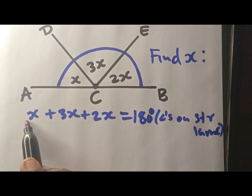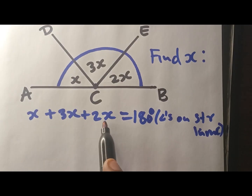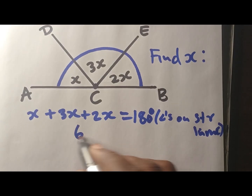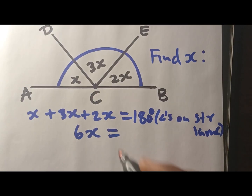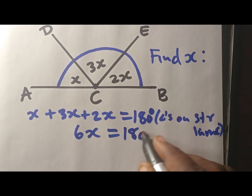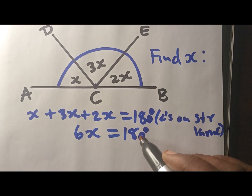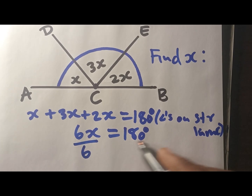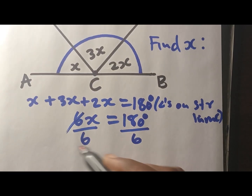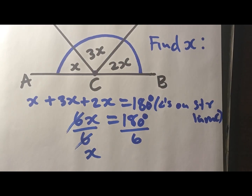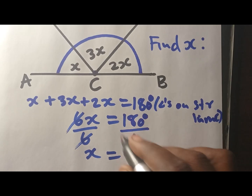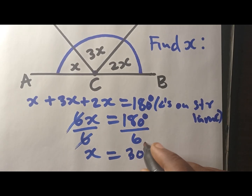So: 1x plus 3x plus 2x — these are 6x. Now you need to equate them to 180. 6x equals 180. But we need x, so we divide both sides by 6. Why are we doing this? Because we want this 6 to leave x alone. Now we have x alone, and this gives us the value of x, which is 30 degrees.